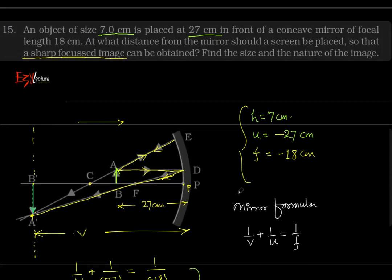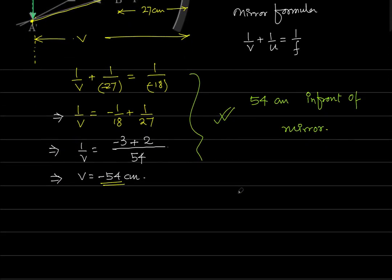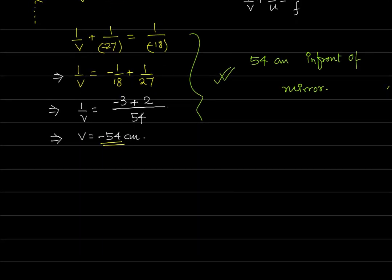The second part of the question is find the size and the nature of the image. What is the size and the nature of the image? Magnification is a very important formula. If we talk about magnification, the formula is height of image upon height of object. This is how we relate height of object and height of image to magnification.